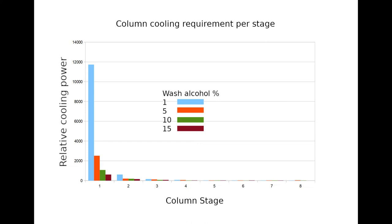The column is designed to optimise performance in those 15 or so stages, and to do that the vapour coming into them needs to have a fairly constant ethanol vapour flow rate. To achieve this, the total power required for a 1% wash concentration is a lot more than at 15%, and almost all of it is dissipated in the first three stages — most in the first stage — and almost all of it is to condense water vapour.